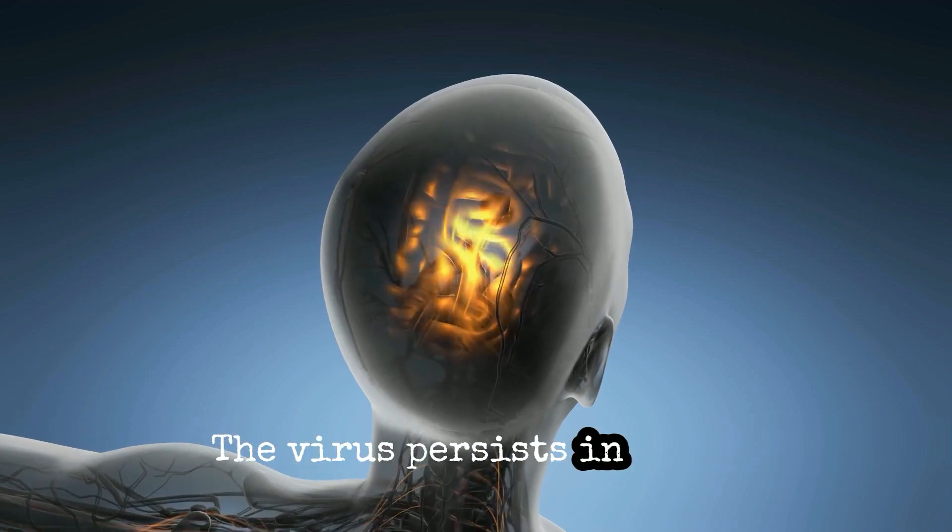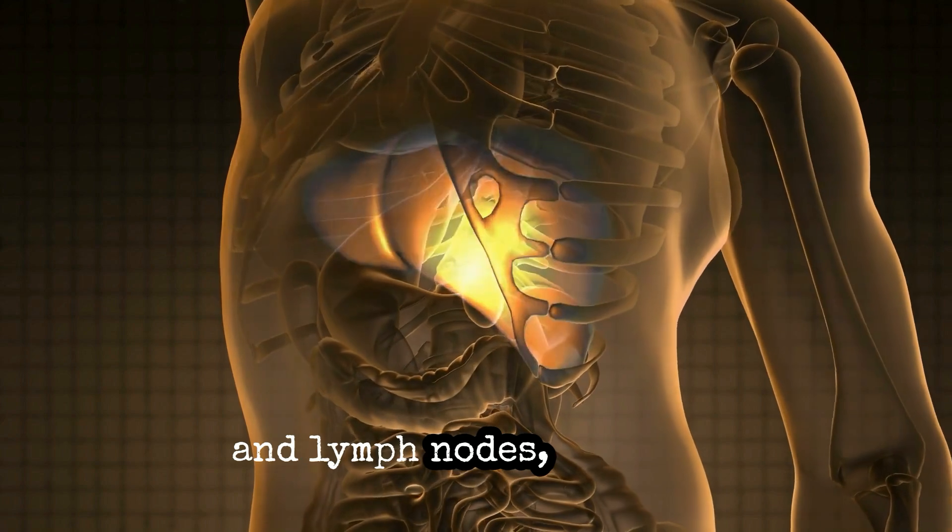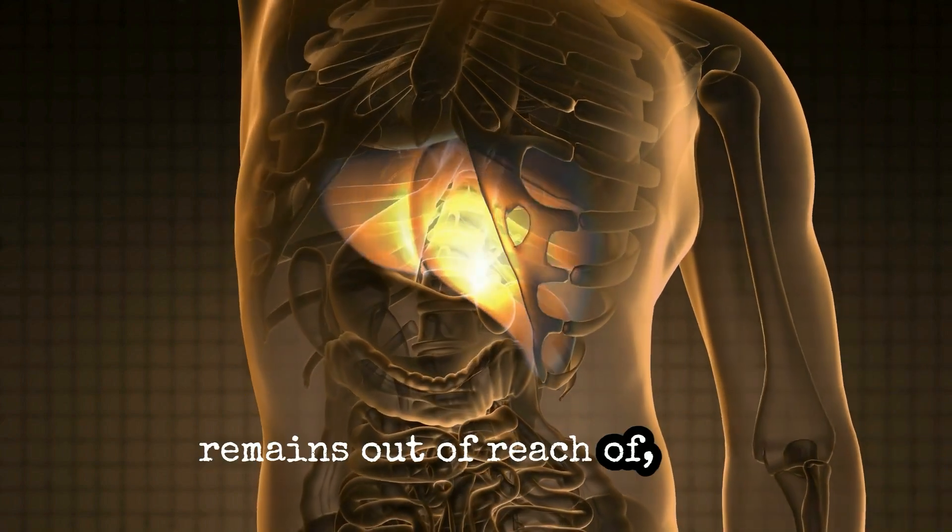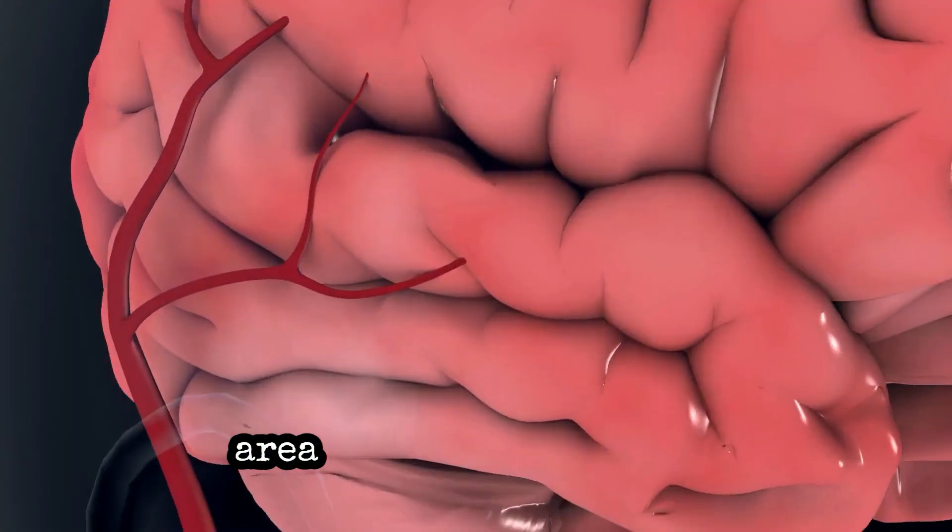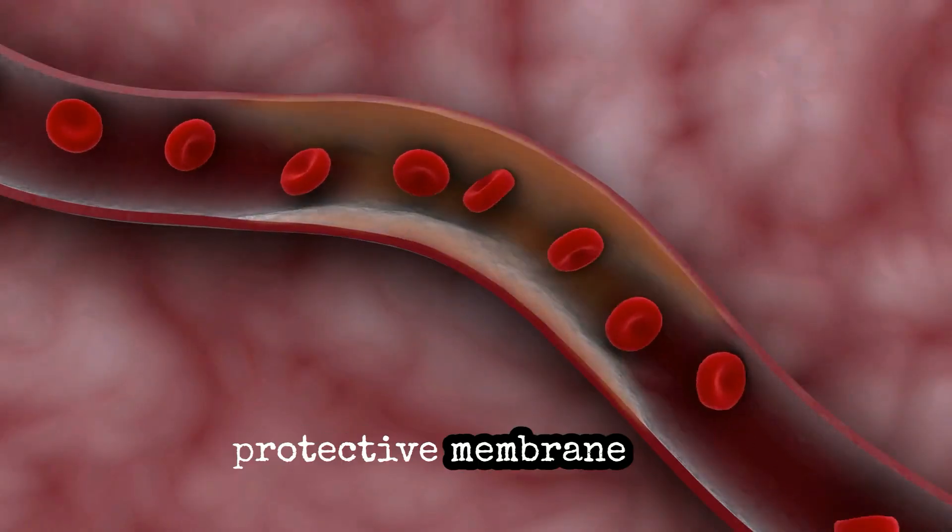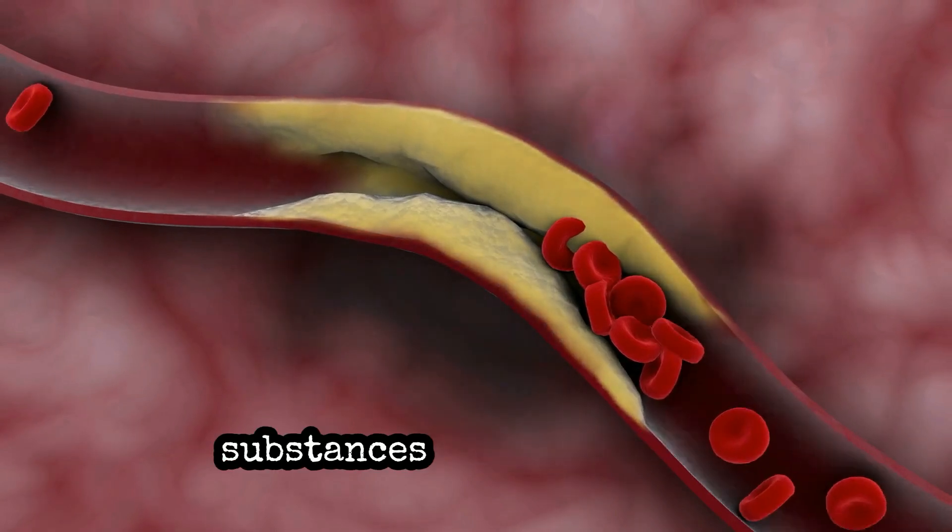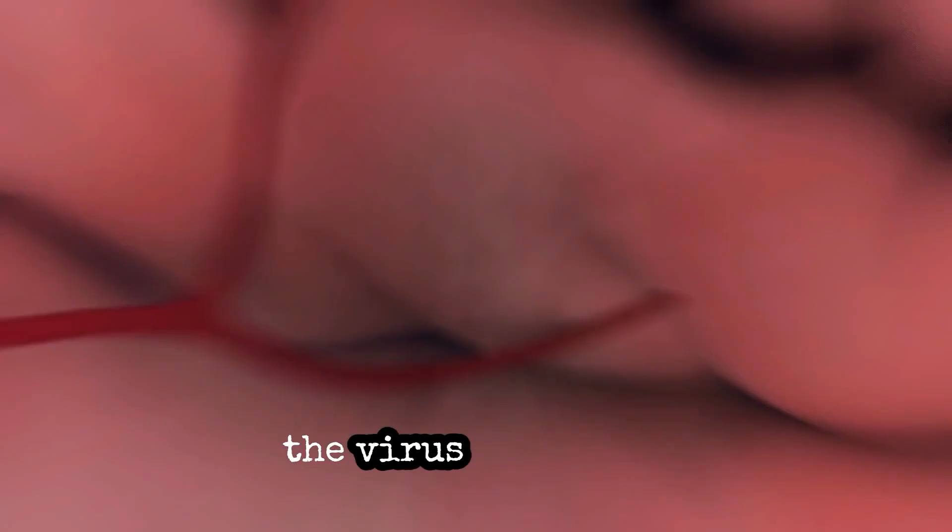The virus persists in viral reservoirs in the brain, liver and lymph nodes, where it remains out of reach of ART. The brain has been a particularly challenging area for treatment due to the blood-brain barrier, a protective membrane that shields it from harmful substances, but also blocks treatments, allowing the virus to persist.